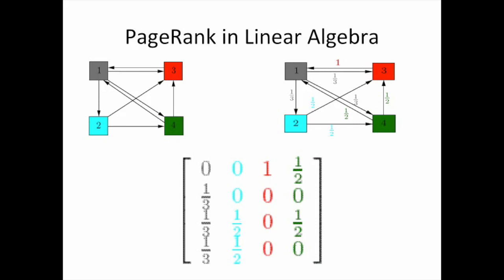If you remember, one connects with three, connects with four, and connects with two. So that would be one-third of all the results if you look in column one. One-third goes to link two, one-third goes to link three, and so on. You can go through this map and determine this matrix to determine which websites are most important.